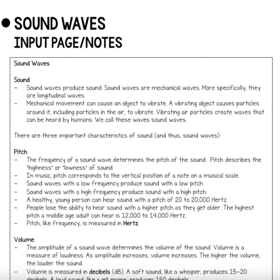Sound waves produce sound. Sound waves are mechanical waves. More specifically, they are longitudinal waves. Mechanical movement can cause an object to vibrate. A vibrating object causes particles around it, including particles in the air, to vibrate. Vibrating air particles create waves that can be heard by humans. We call these waves sound waves.